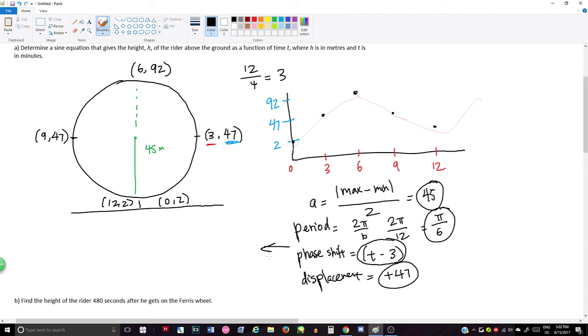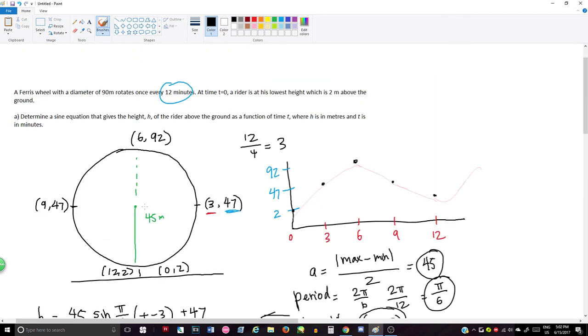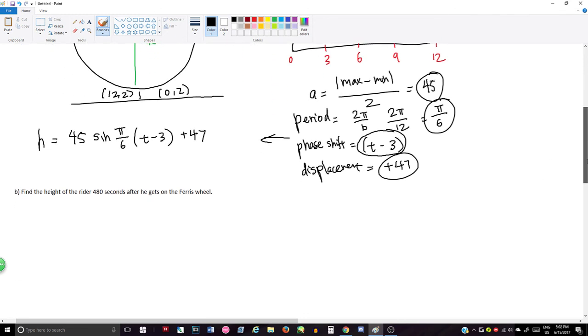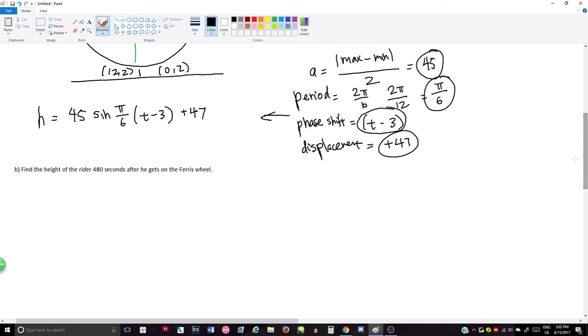So we have height in meters is equal to 45 sine pi over 6. This is our period, t minus 3. Remember, t is the minutes. This will come into play in question b, plus 47. So this is going to be our sine equation. And we can input any number into this and we can get a height or vice versa. Just double checking to make sure I didn't accidentally make a mistake. Okay, looks good.